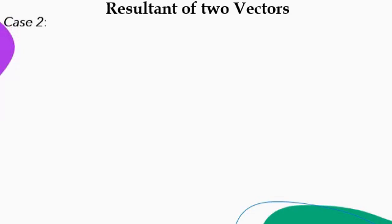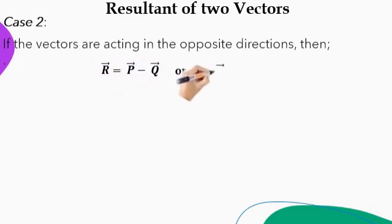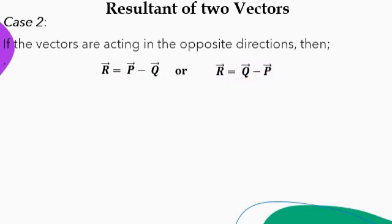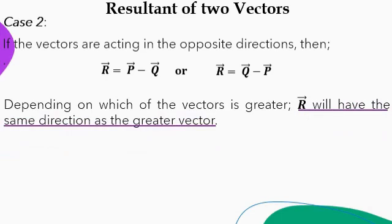Case two: if the vectors are acting in opposite directions, then the resultant is either P minus Q or Q minus P. This depends on which of the vectors is greater. If P is greater than Q, then the resultant equals P minus Q. If Q is greater than P, then the resultant equals Q minus P. The resultant will have the same direction as the greater vector.